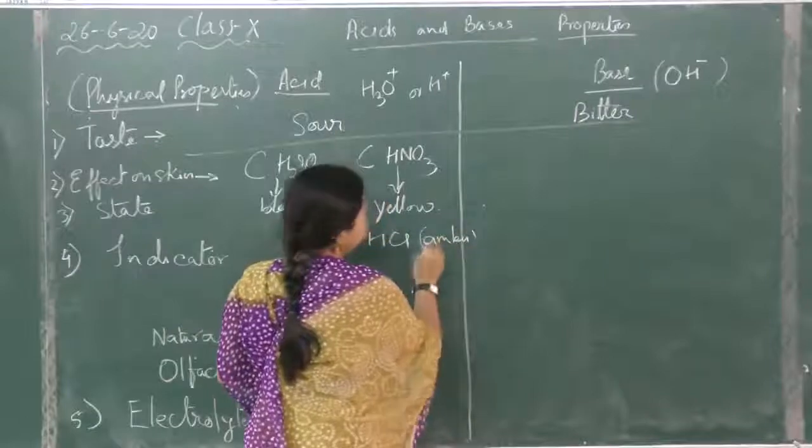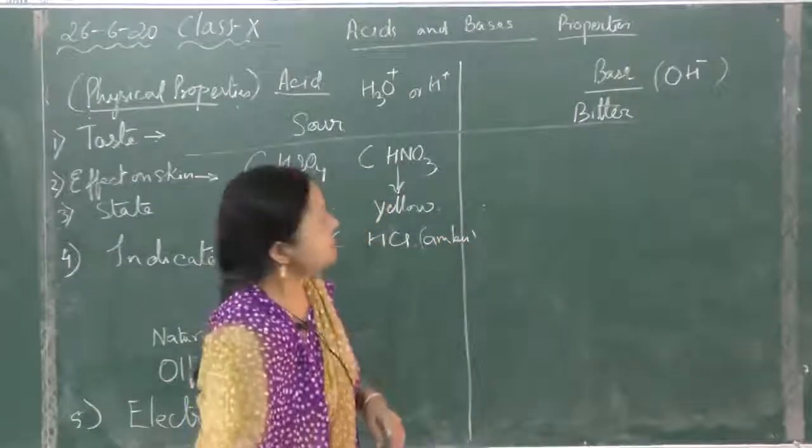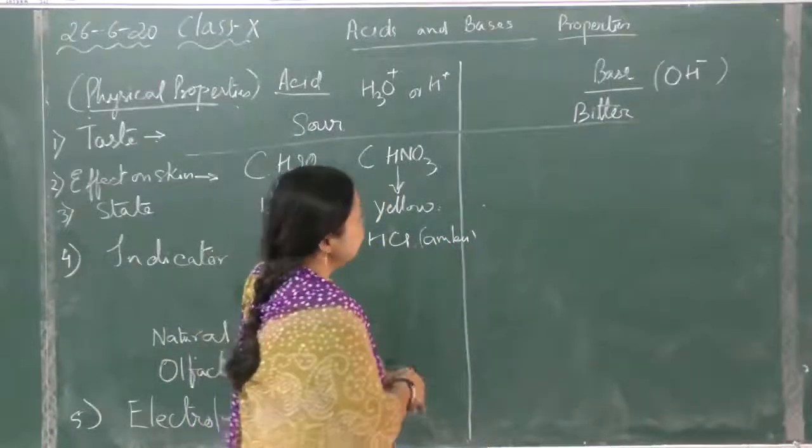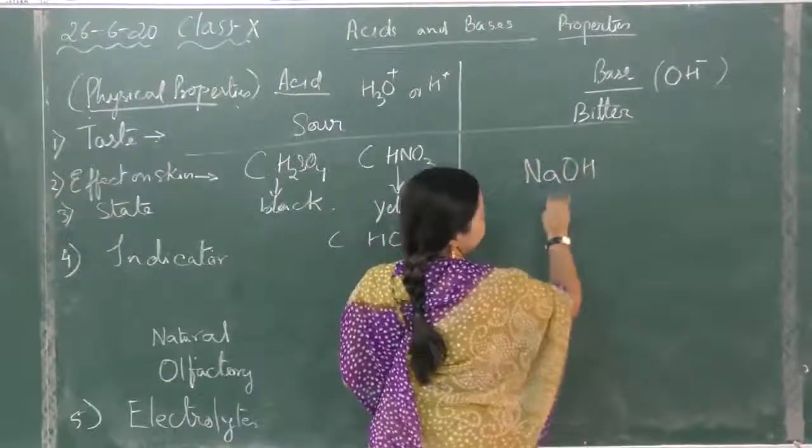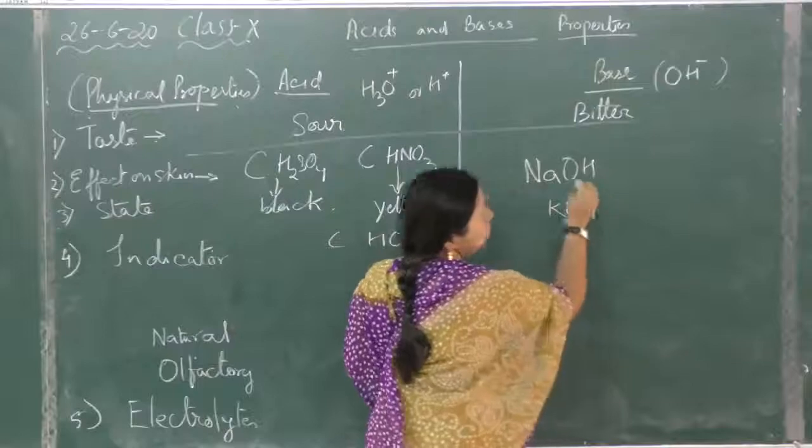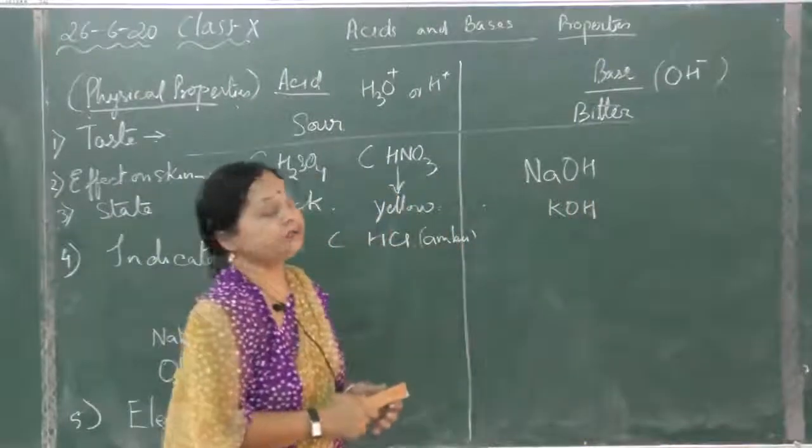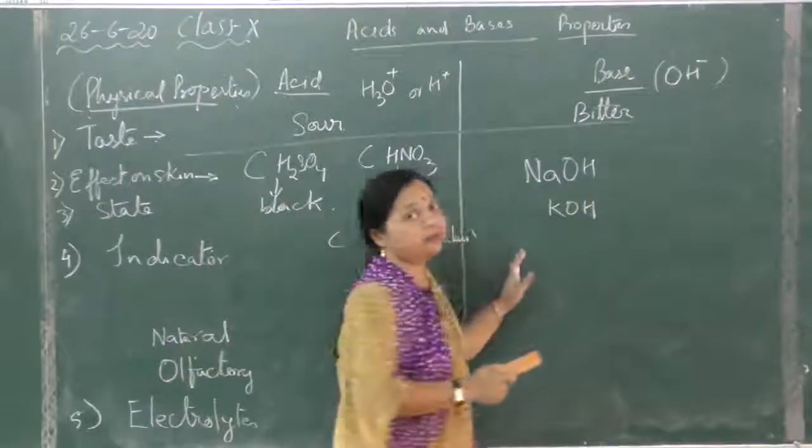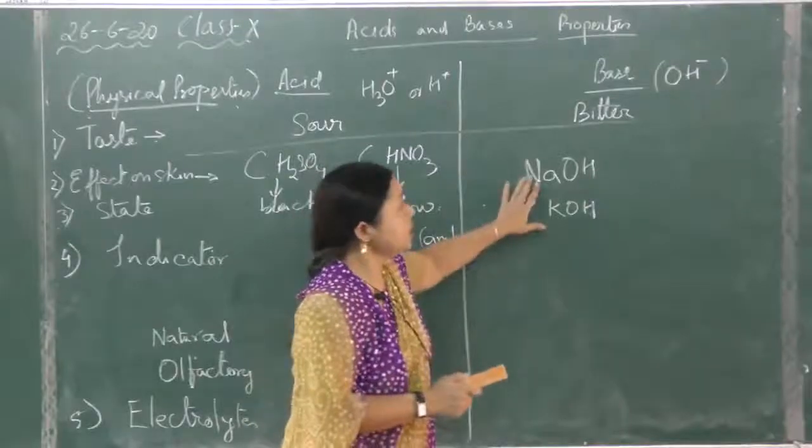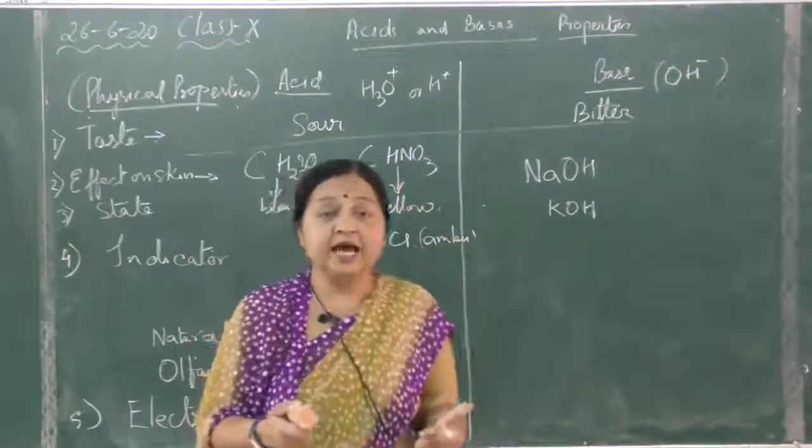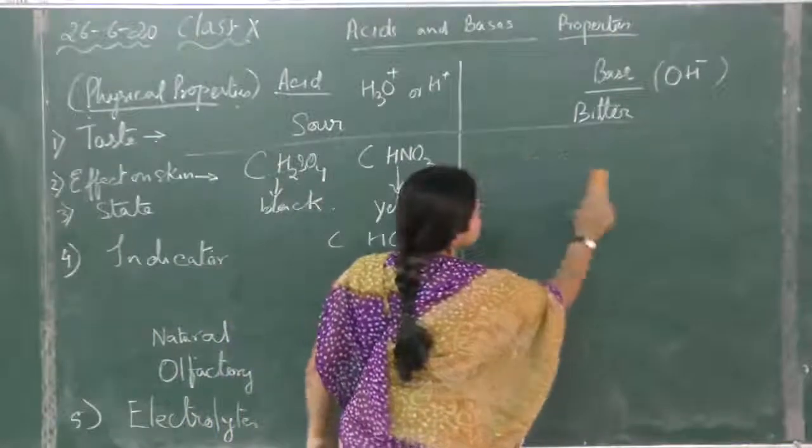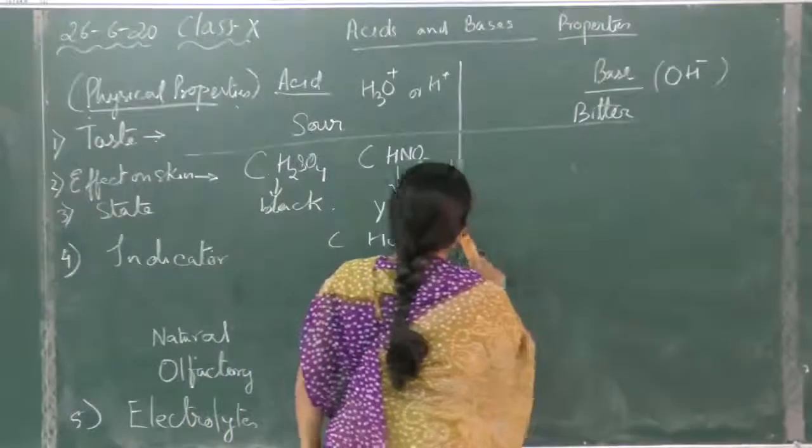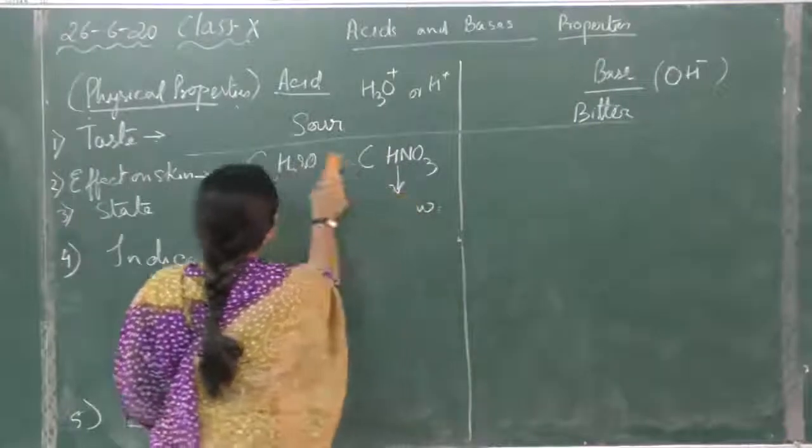Now in the base also, if it is caustic alkalis, NaOH, KOH, they also are corrosive in nature. Not all, remember that we drink an alkali as an antacid like magnesium hydroxide. So only these corrosive alkalis, that is the caustic alkalis, are corrosive in nature.